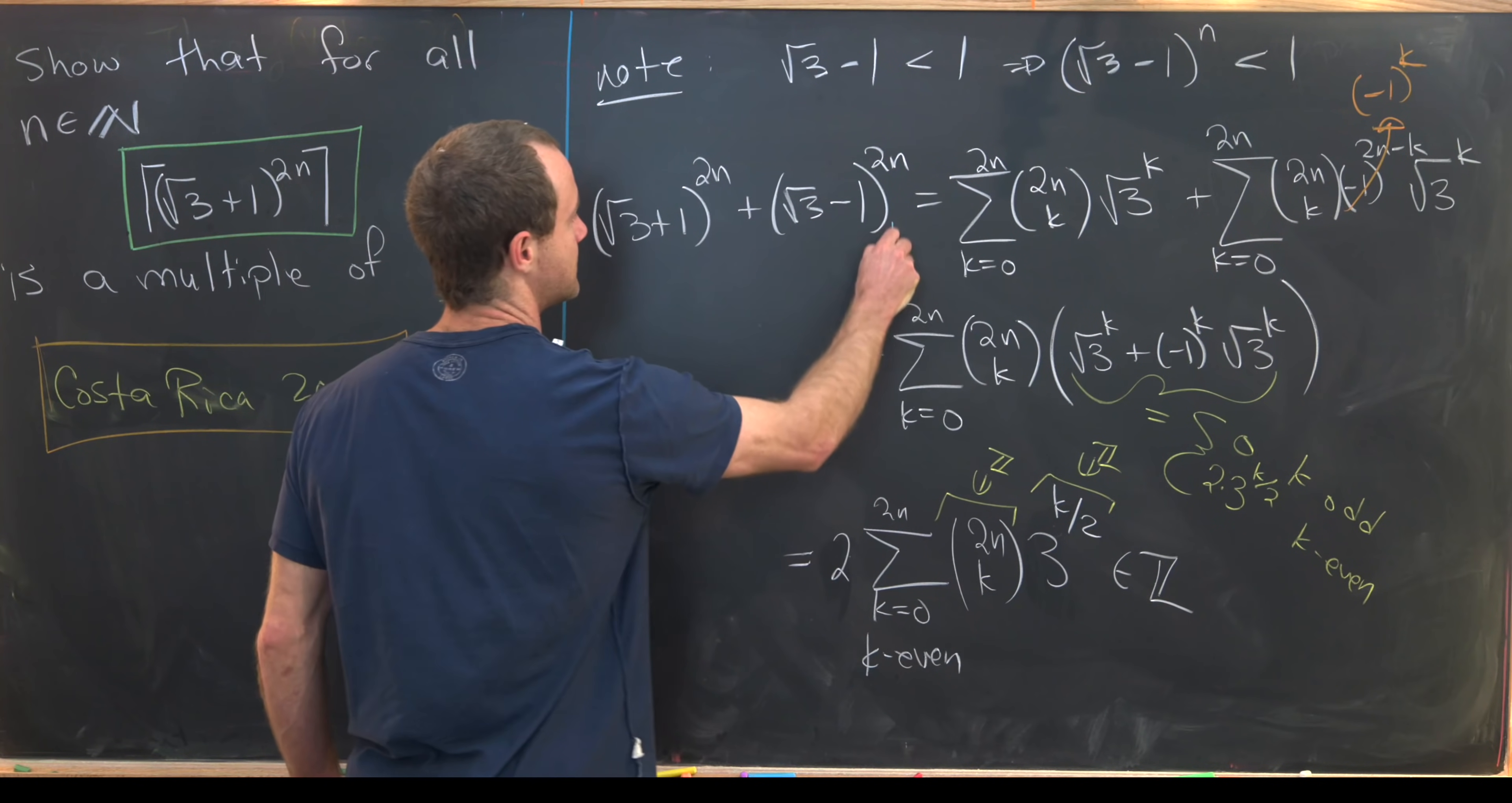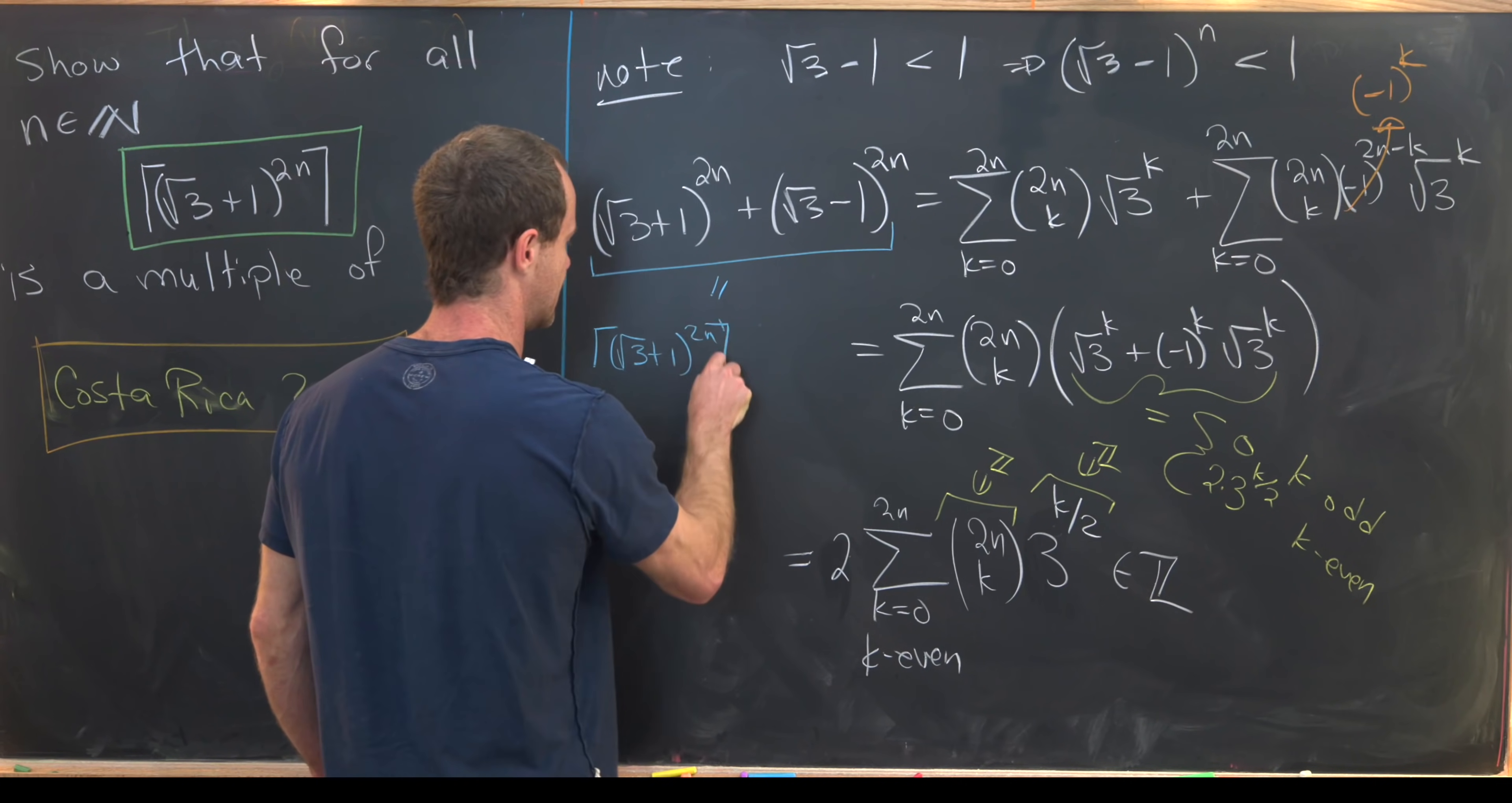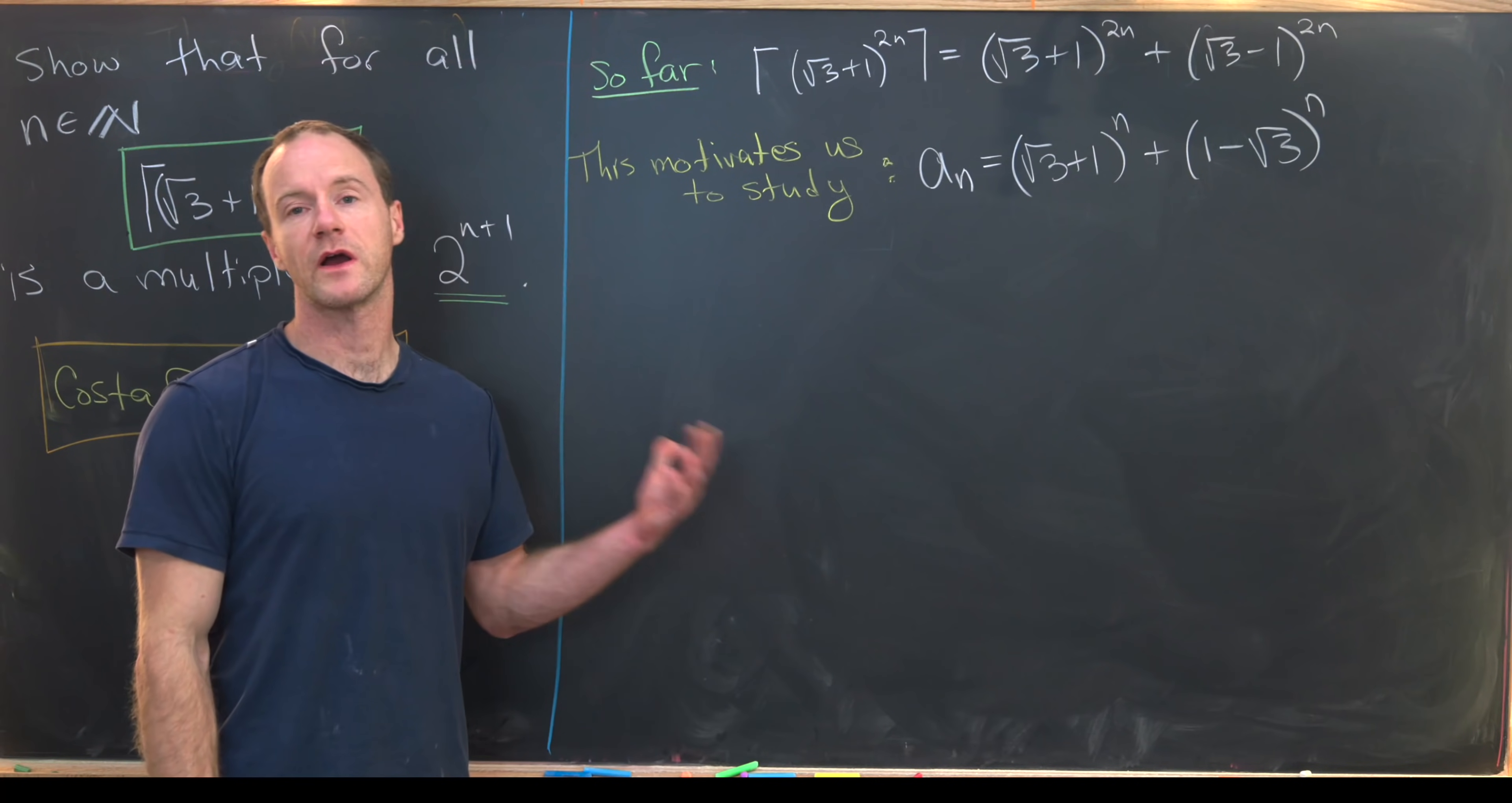But again, since we're adding something which is less than 1 to our goal object, that means that this is equal to the ceiling of the square root of 3 plus 1 to the 2n. So that was like kind of the first step of our solution. And now we'll maybe clean up the board, recall that on the next board, and we'll move on to the next step.